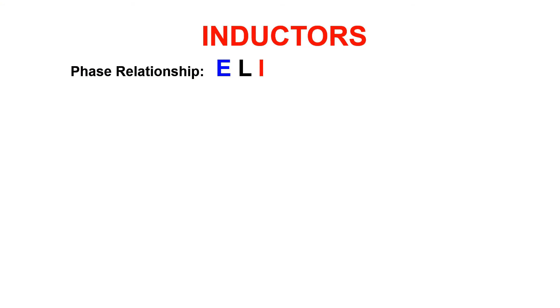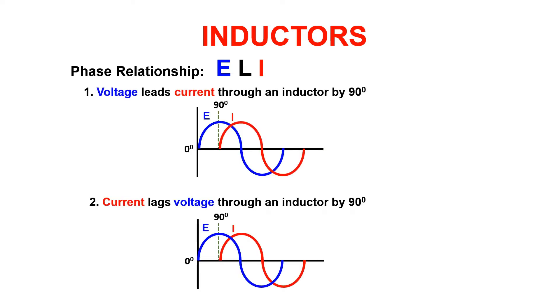Now to talk about phase relationships. If we utilize the word ELI to remember the phase relationship of voltage to current we can say that voltage leads current by 90 degrees. We can also say that current lags voltage by 90 degrees.